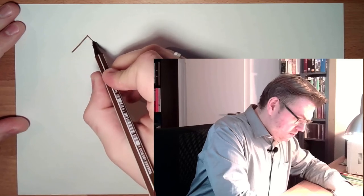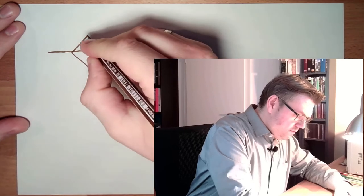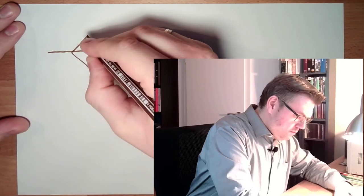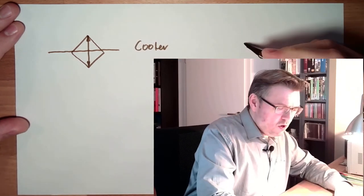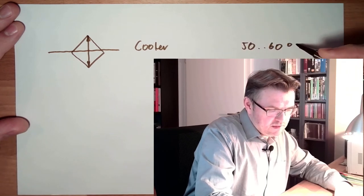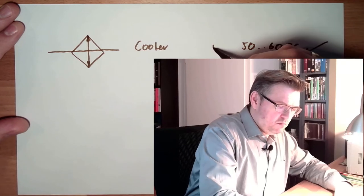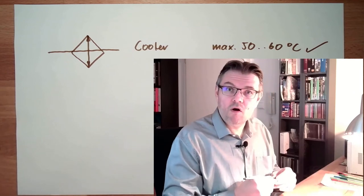However, cooling is often an issue. I'll show you the symbol of a cooler. Usually looks like this. That's it. This is a cooler. And we said 50 to 60 degrees Celsius, this is okay, maximum. This should be our goal for our oil.